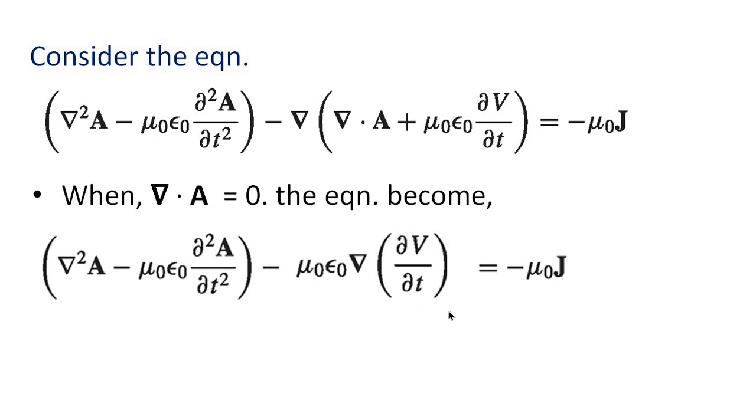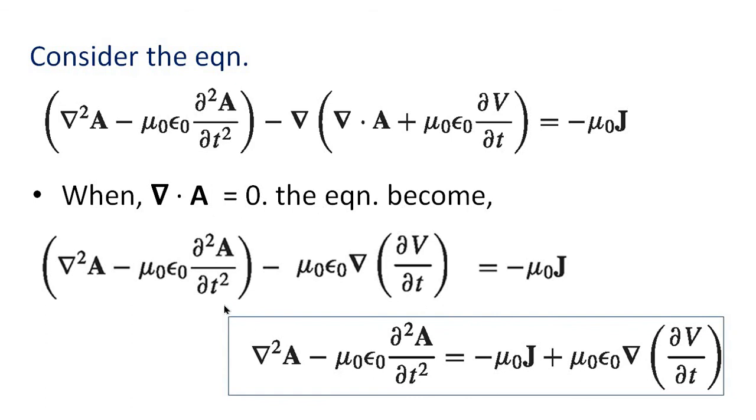So the equation becomes del square A minus mu 0 epsilon 0 d square A by dt square equal to minus mu 0 J plus mu 0 epsilon 0 del dV by dt.